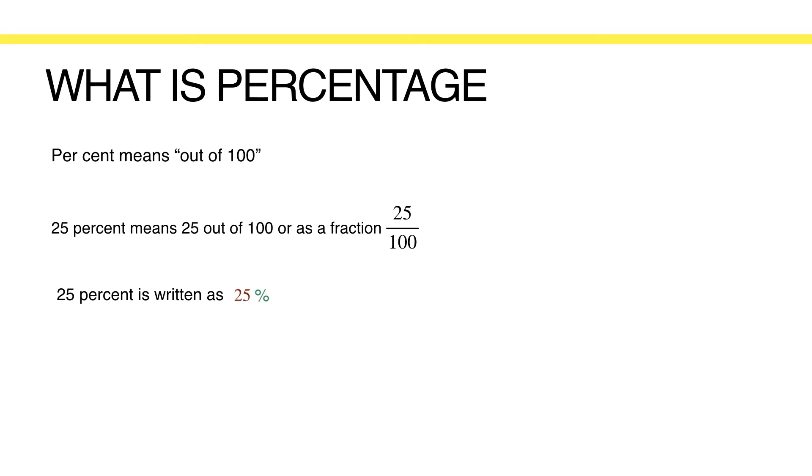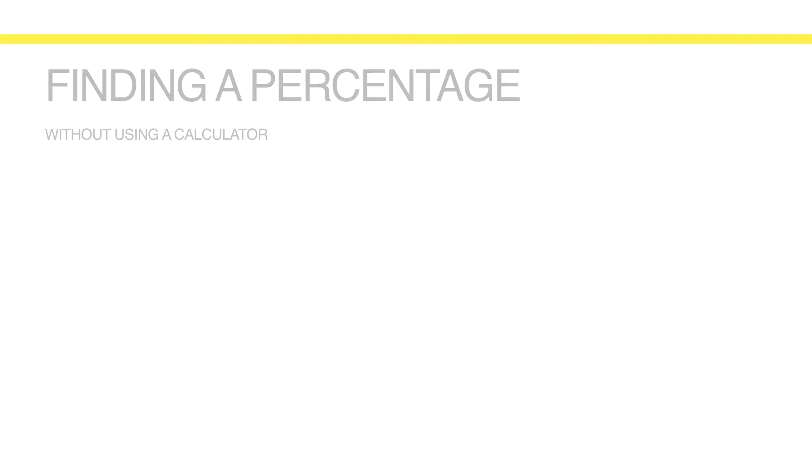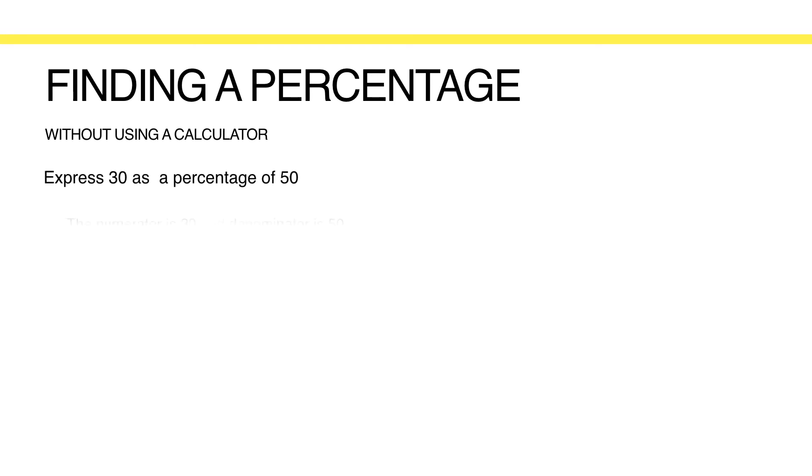Percentages can often appear in non-calculator exam papers, which is why we need to be able to find percentages using non-calculator methods. For example, if you want to express 30 as a percentage of 50, we write it as a fraction first: 30 as the numerator and 50 as the denominator. All you have to do now is change the denominator so that it is out of 100. Since 50 multiplied by 2 is 100, we multiply the top and bottom by 2 to give 60 over 100. Therefore, 30 as a percentage of 50 is 60%.